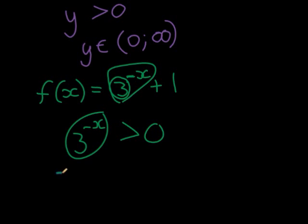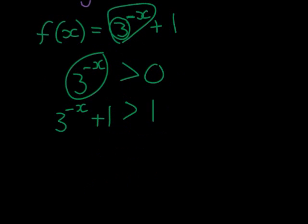It's not how I get my output, though. I must still, after I've put the x into the exponent there, I must still add a 1. So on both sides, I add a 1. And I see zero plus one is a 1. And I see that y is therefore greater than 1.